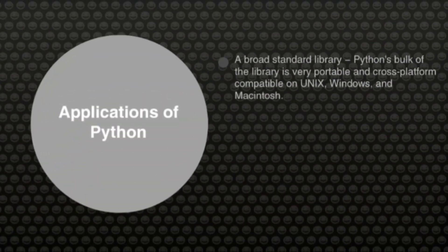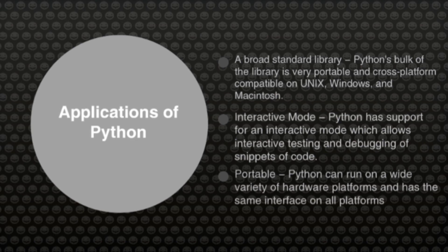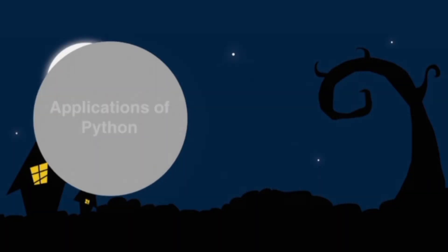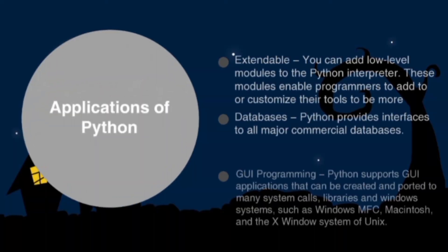A broad standard library: Python's bulk of the library is very portable and cross-platform compatible on Unix, Windows, and Macintosh. Interactive mode: Python has support for an interactive mode which allows interactive testing and debugging of snippets of code. Portable: Python can run on a wide variety of hardware platforms and has the same interface on all platforms. Extendable: you can add low-level modules to the Python interpreter; these modules enable programmers to add to or customize their tools to be more efficient.